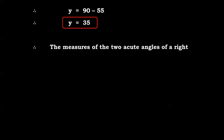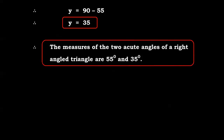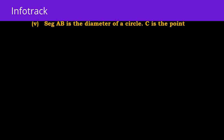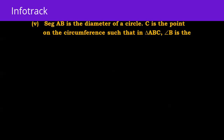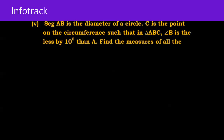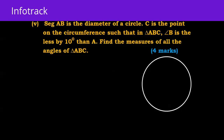The measures of the two acute angles of the right triangle are 55 degrees and 35 degrees. Next: segment AB is the diameter of a circle, C is a point on the circumference such that in triangle ABC, angle B is less by 10 degrees than angle A. Find the measure of all angles of triangle ABC. Since AB is a diameter, angle C = 90 degrees because the angle subtended by a diameter is 90 degrees.